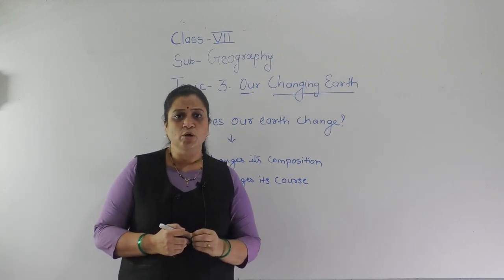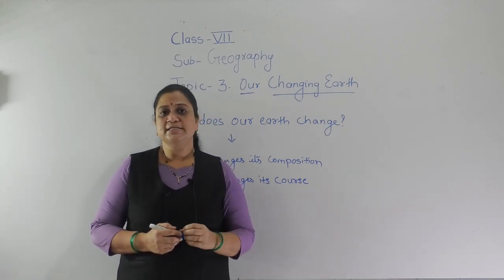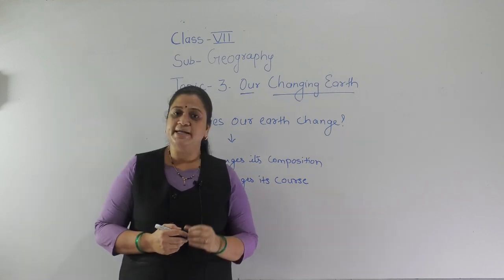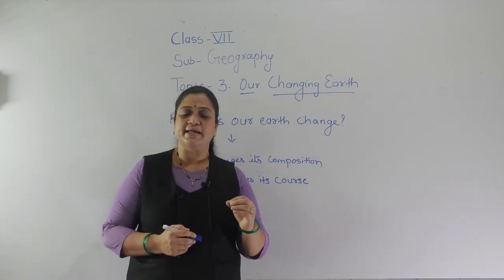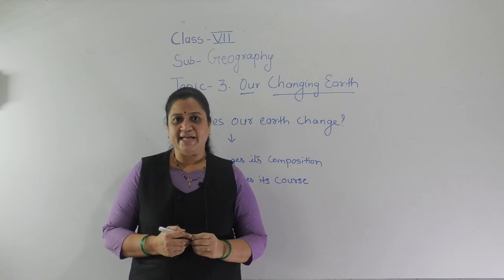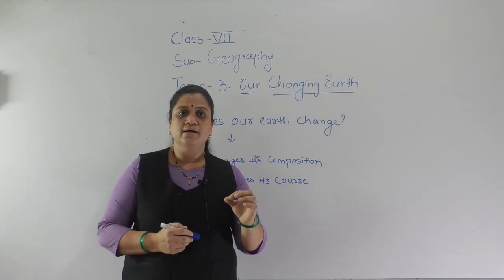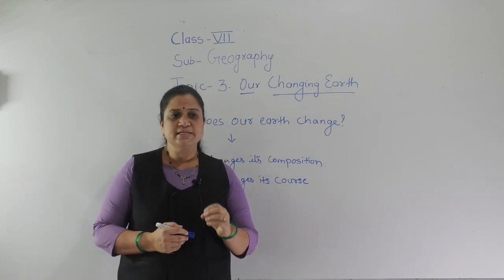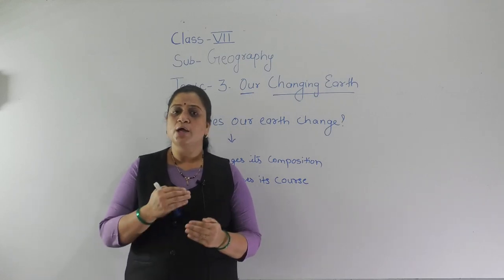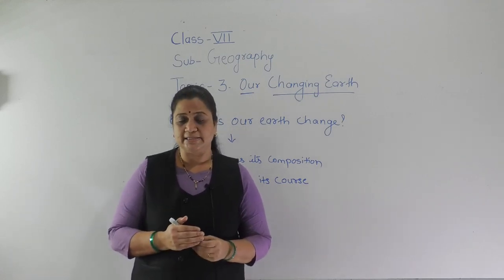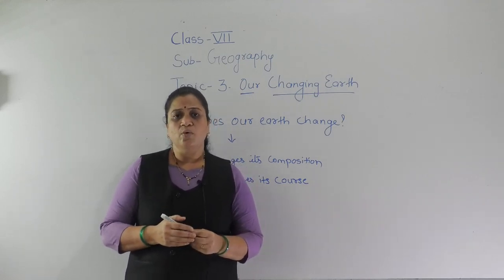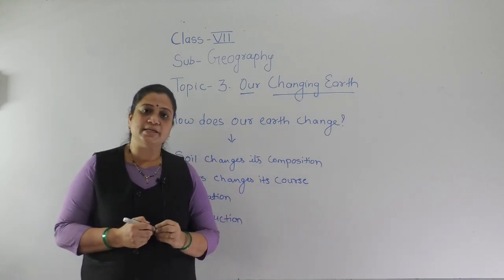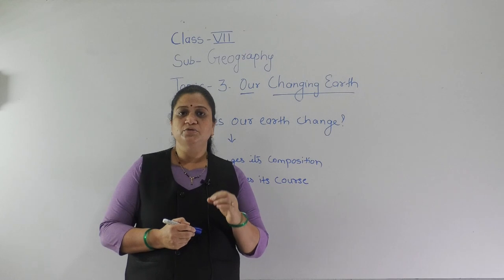The earth's surface is not the same at all places — its height varies from place to place. We see differences in the height of mountains as well, meaning the landforms are also not the same everywhere. Have you ever thought about how these changes have taken place on the earth's surface?